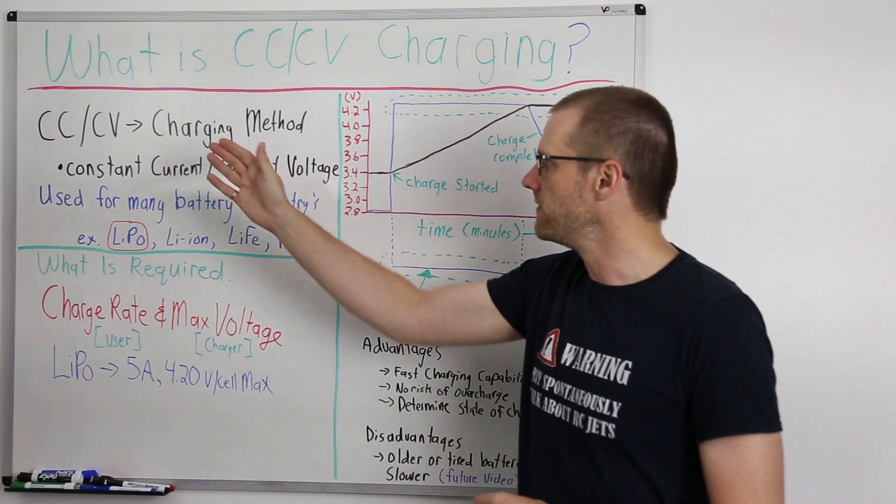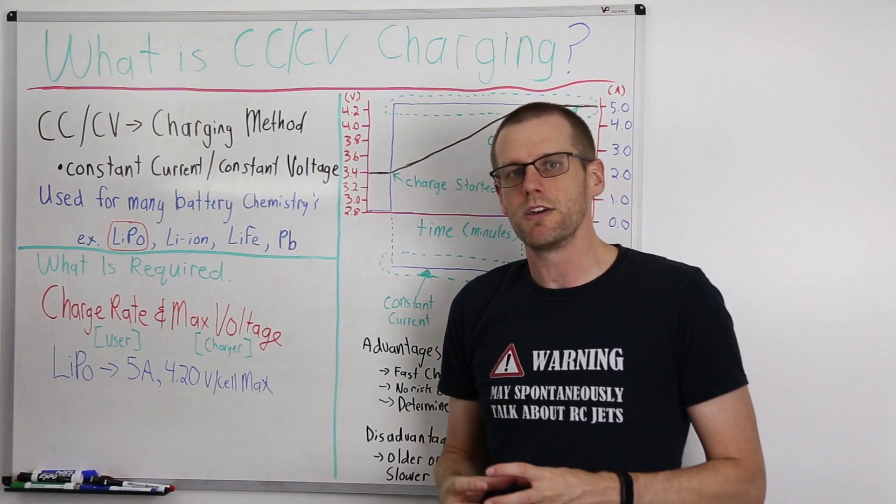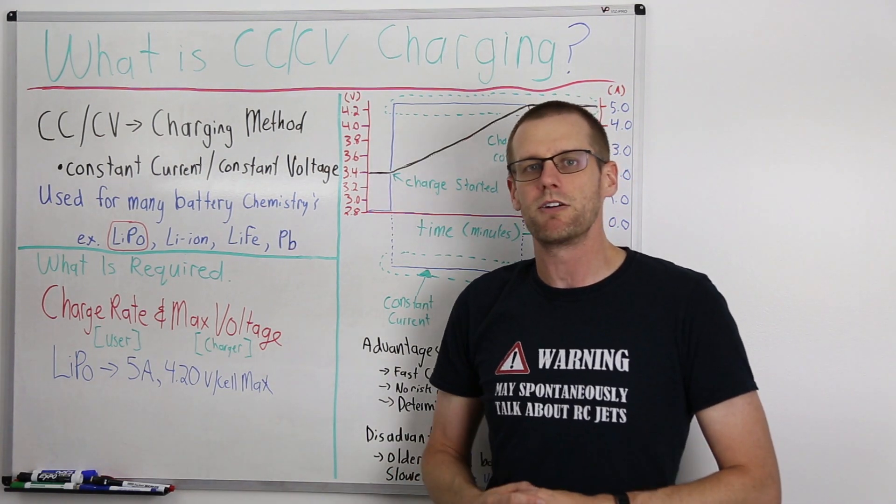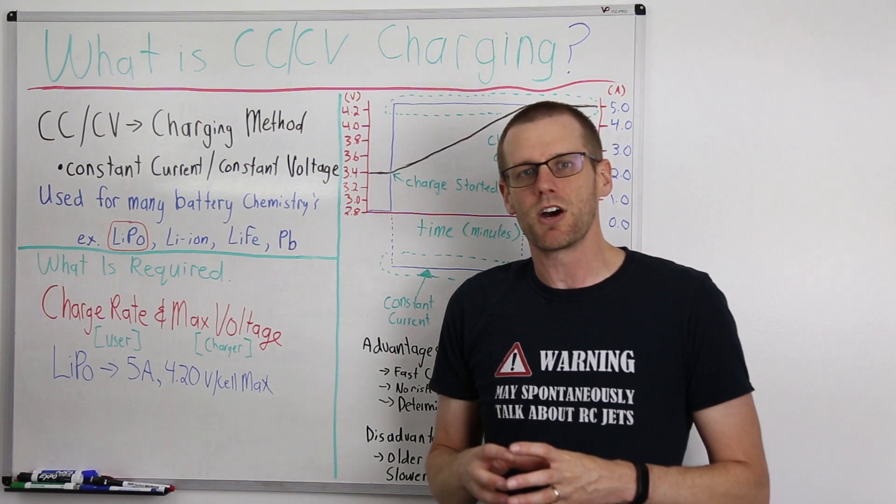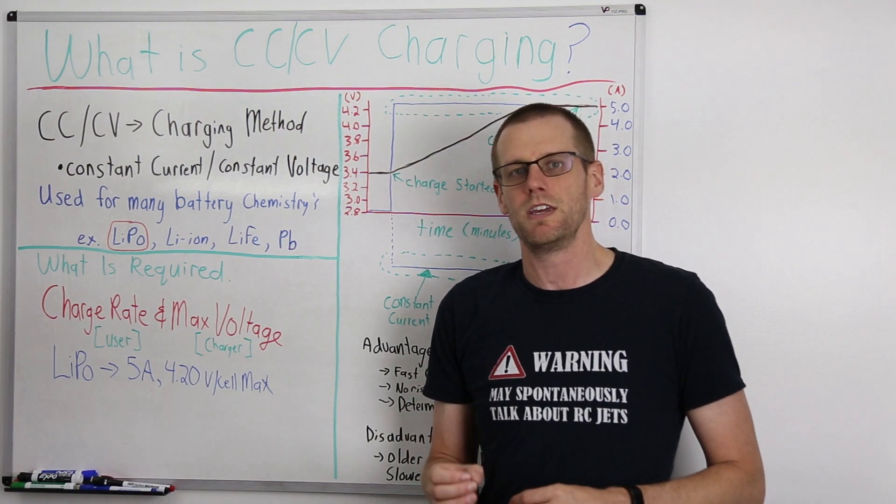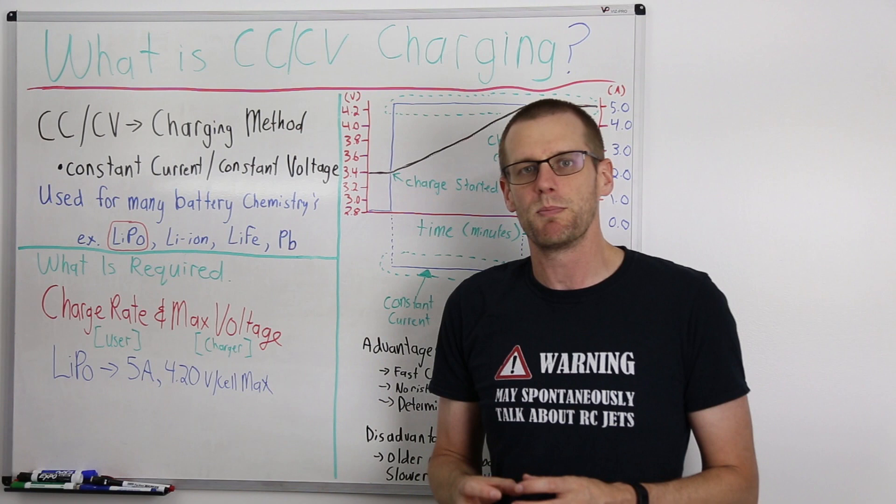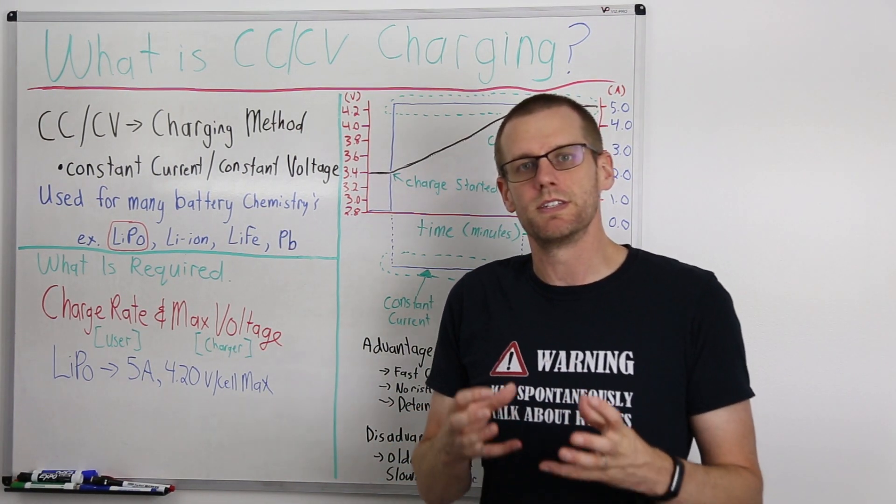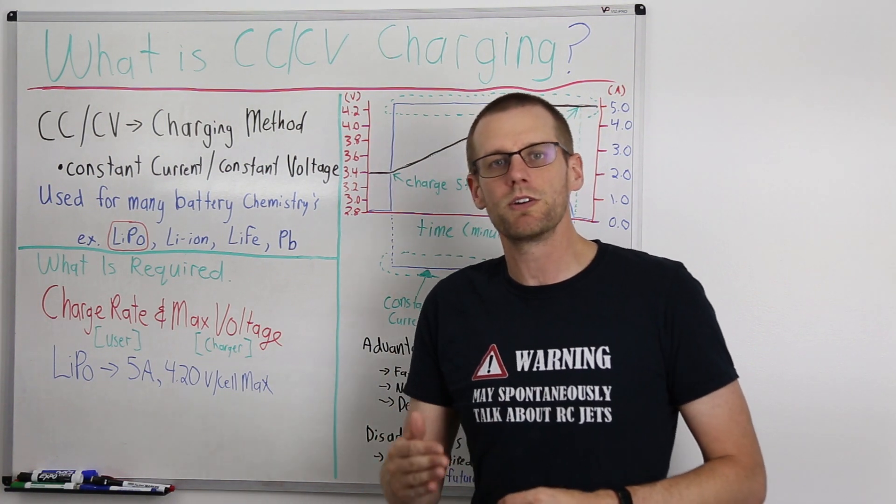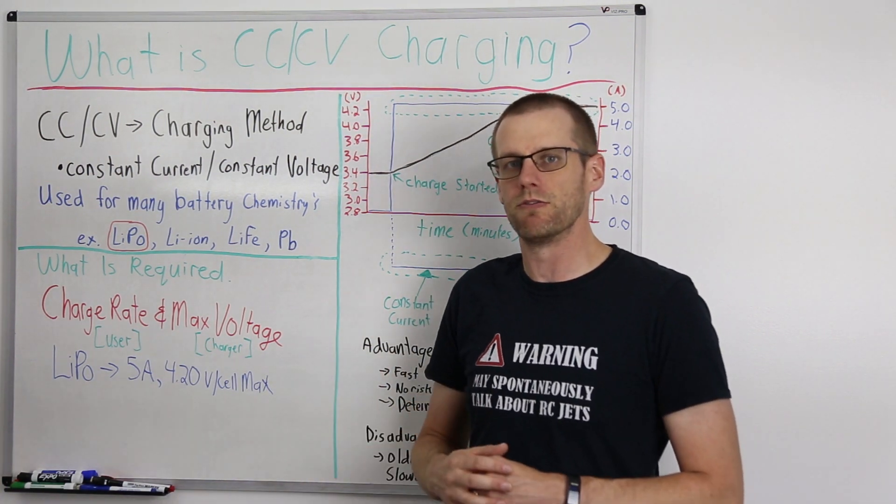CC/CV is a charging method that is used for all the popular RC batteries that we use today. If you have a charger that uses any of these common battery packs, you can guarantee that your charger has this capability and you use it every time you're charging those batteries. The acronym CC stands for constant current, where CV stands for constant voltage.